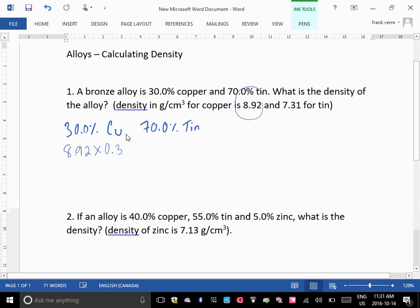Okay, and we're going to add that to the density of tin, but not at 100%, at 70%. The density of tin is 7.31, and the alloy is 70% tin. Okay, so this will give us the density of the alloy.